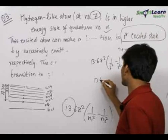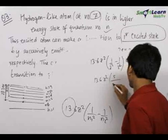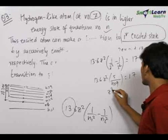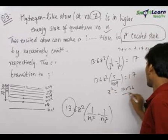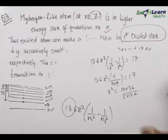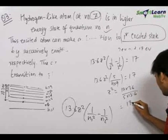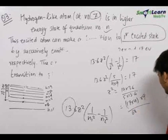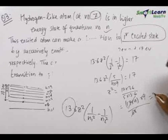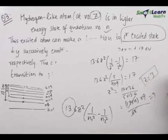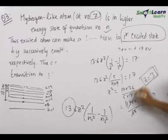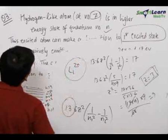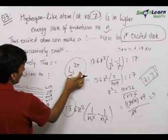This comes out to be 13.6·Z² × (5/36) = 17, therefore Z² = (17 × 36)/(5 × 13.6) = (17 × 4 × 9)/68 = 9, so Z = 3. The atomic number of the element is 3, which is lithium — specifically the Li²⁺ ion, since it has atomic number 3 and must be a single-electron species.